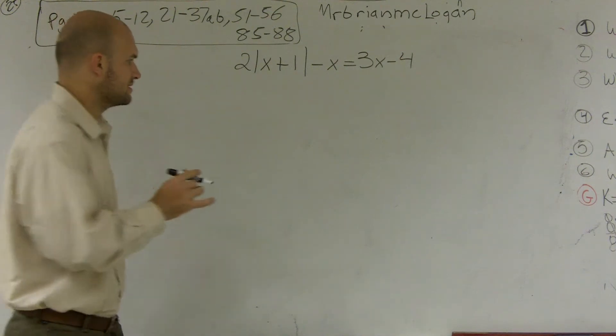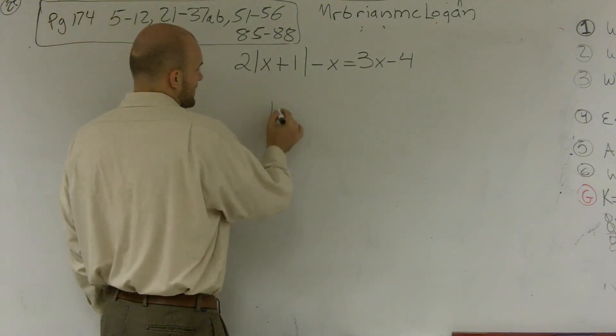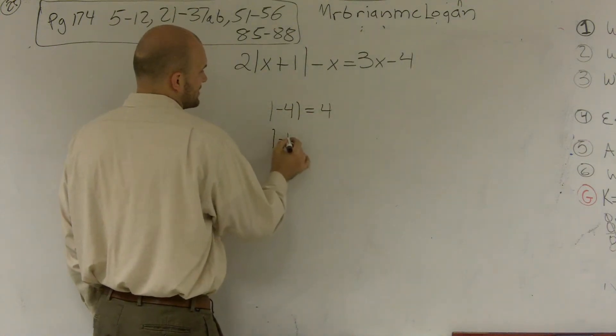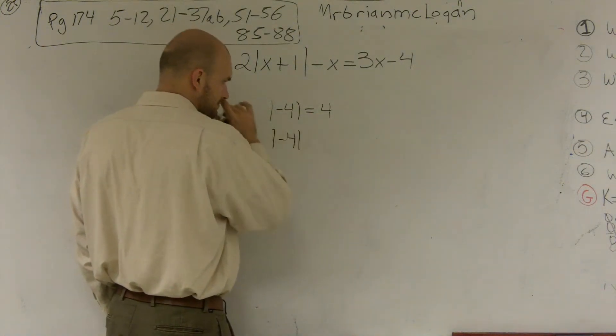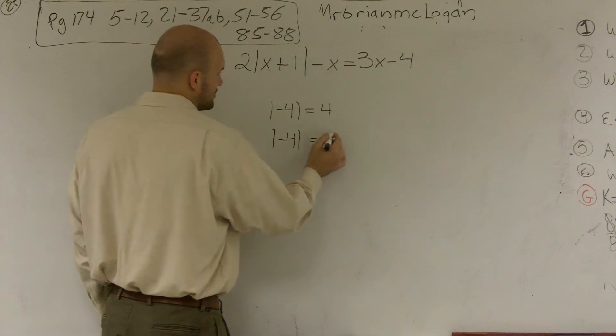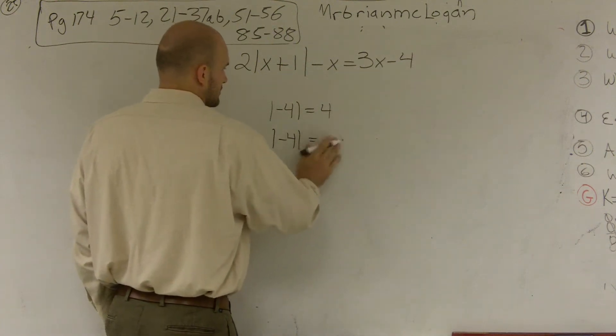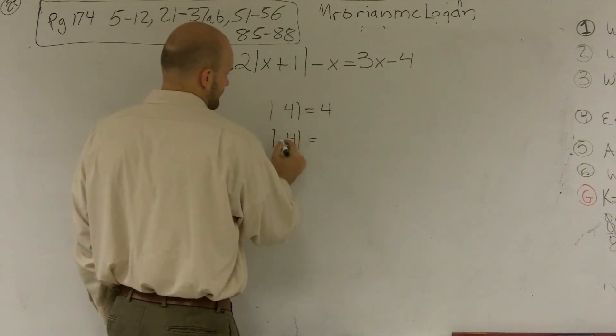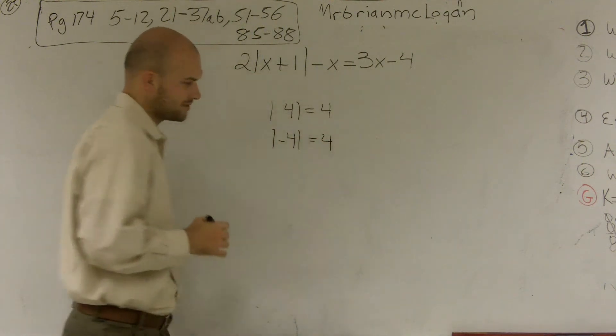First thing is, if I said the absolute value of negative 4, I can say that equals 4. And I can say negative absolute value of that also equals 4. Those two also equal 4, all right?